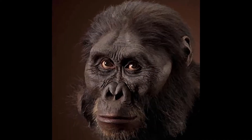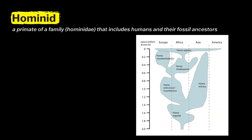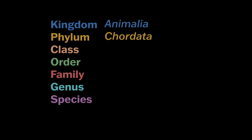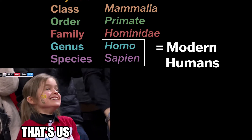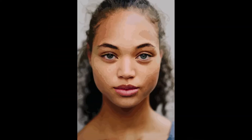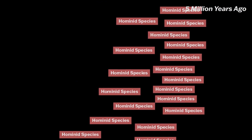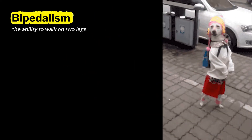I know you probably look more like this than this. That's because you're a modern-day human, not an early hominid. You may have learned in science that living things are put into groups to organize them. Hominid is a word for the family group that includes humans. Our grouping is Animalia, Chordata, Mammalia, Primate, Hominidae, Homo sapiens — that's us, by the way. We're Homo sapiens, aka modern humans.